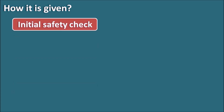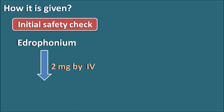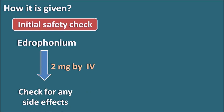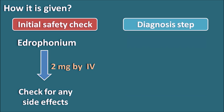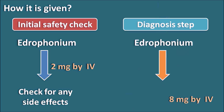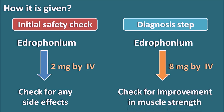Regarding how the test is given: Edrophonium should be checked for possible side effects before the real diagnosis, so this test has two steps. The first is an initial safety check where Edrophonium is given as a 2 mg dose by IV route, and side effects like bradycardia, difficulty in breathing, and hypotension are checked. If these side effects are not observed significantly, then we proceed to the diagnosis step where Edrophonium is given at a dose of 8 mg by IV route and improvement in muscle strength is checked.